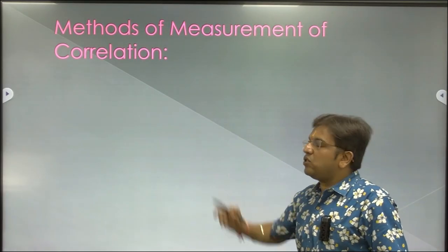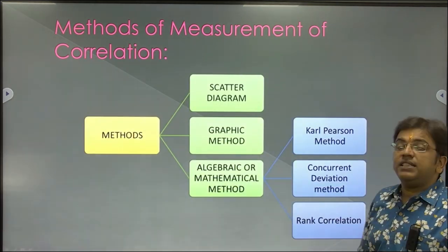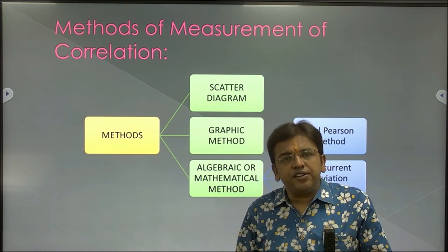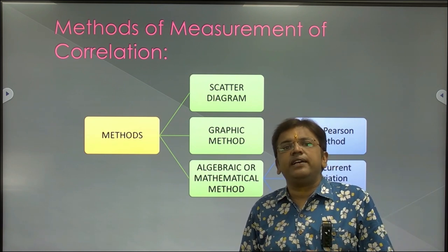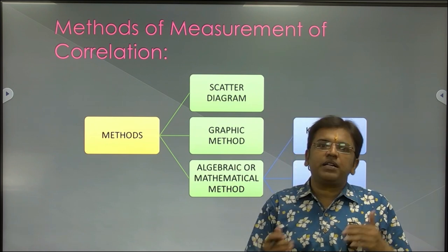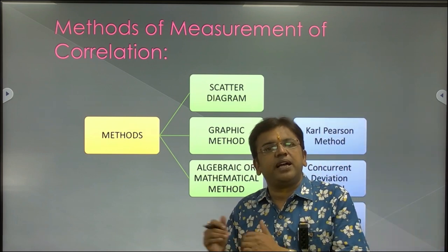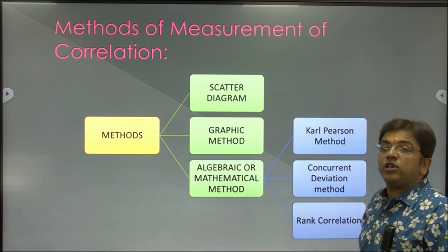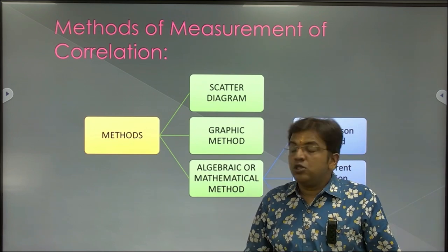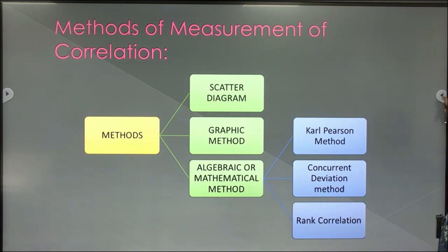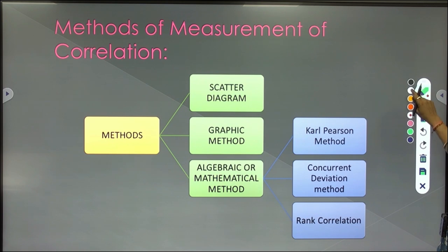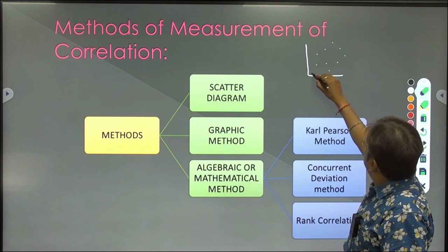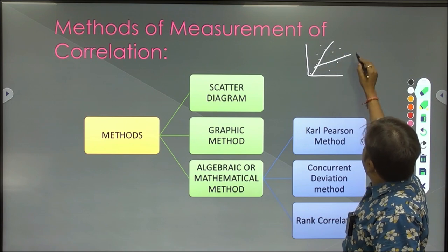What are the methods of measurement of correlation? This is very important in statistical analysis and research methodology. As you know, a researcher may come from a mathematical, scientific, commerce, management or arts background. So there are different methods. The first method is the scatter diagram: we take a chart, scatter the different values on it, draw lines through those values, and say that this is correlated.